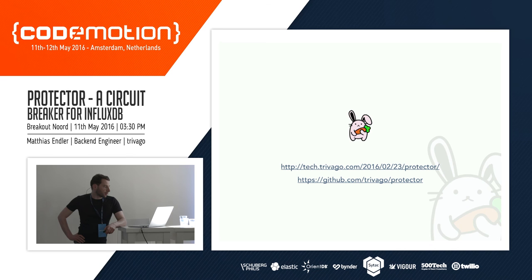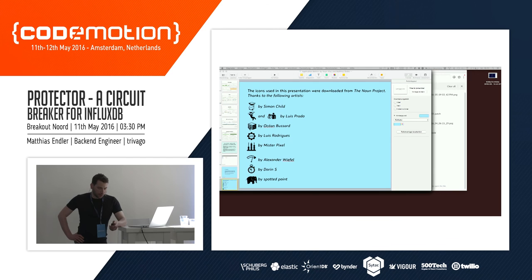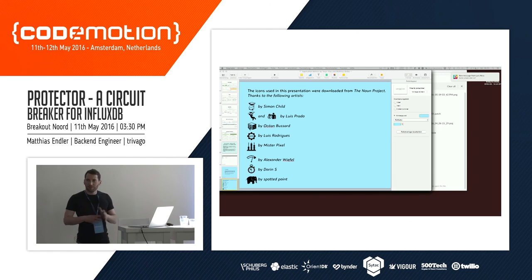There's an idea for your next tool: InfluxDB has clustering support, but it will be closed source. An alternative to clustering is having a consistent hashing ring for each of your nodes, routing traffic to the nodes that have the data, both for querying and writing. Here are two links — one to the GitHub project and one to the tech blog.